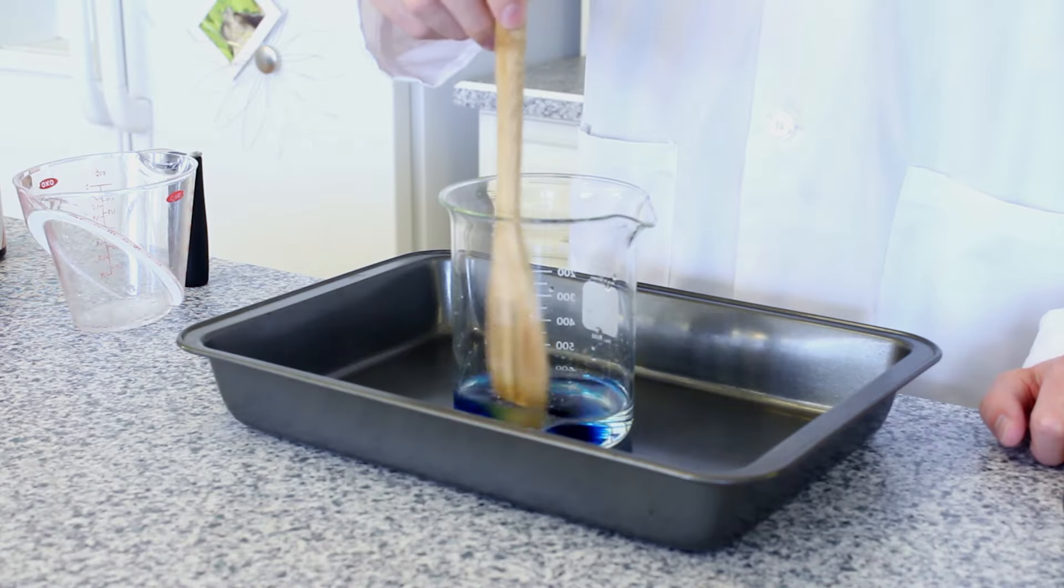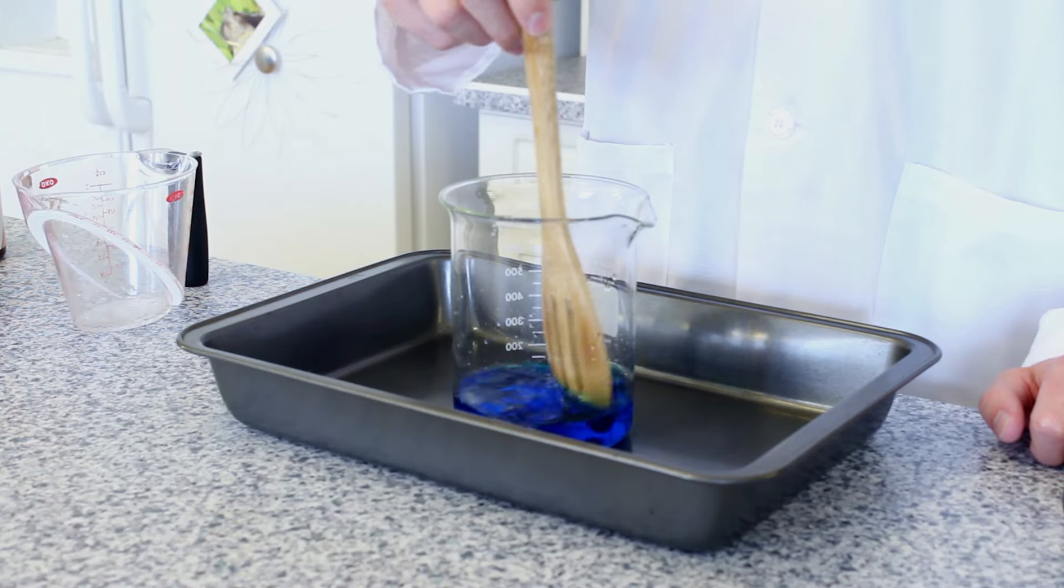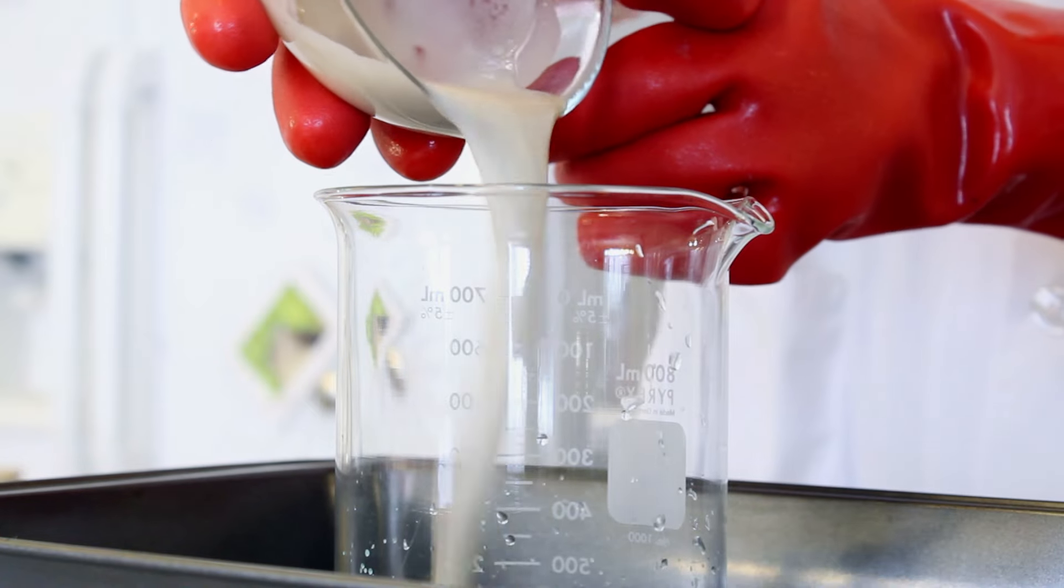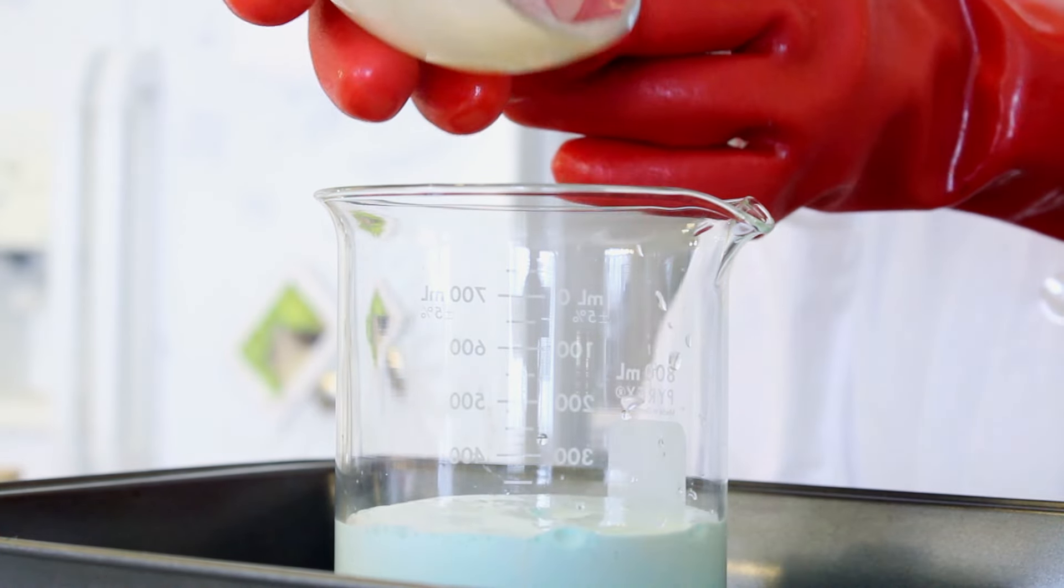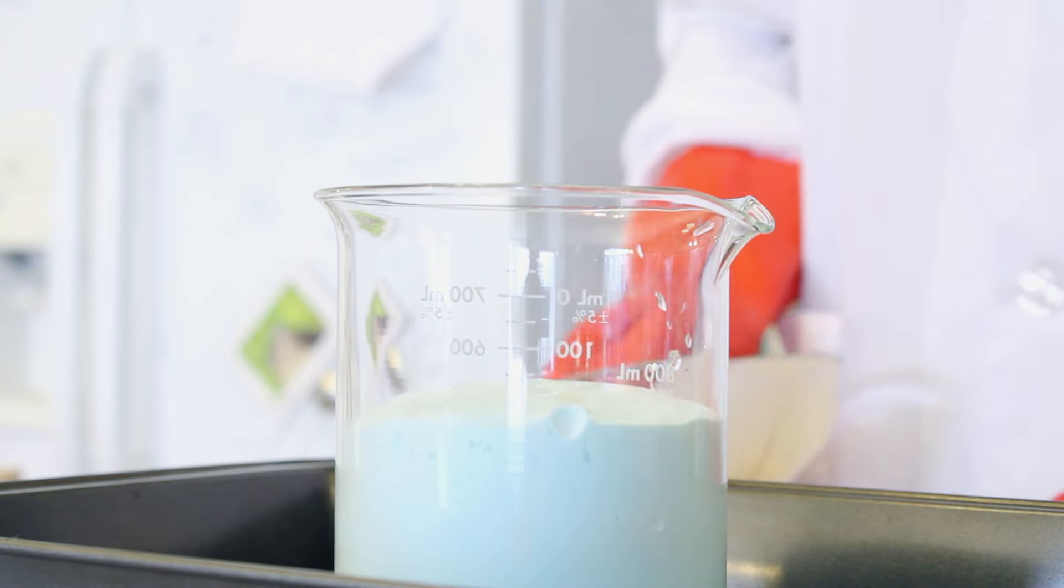Use a spoon to mix it all together. The final step in our experiment is to simply add our activated yeast to our colored hydrogen peroxide solution. In the first test of our experiment, we're adding the activated yeast to a solution of 3% hydrogen peroxide.